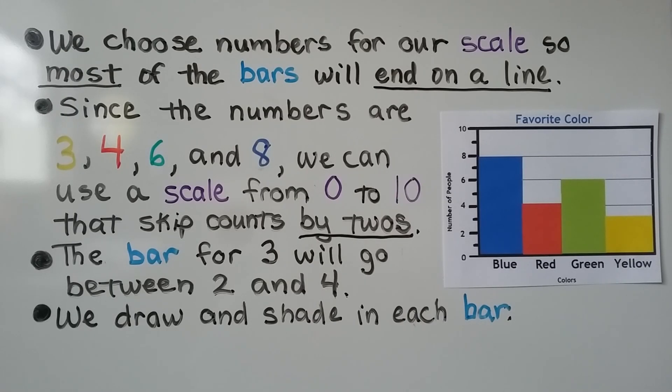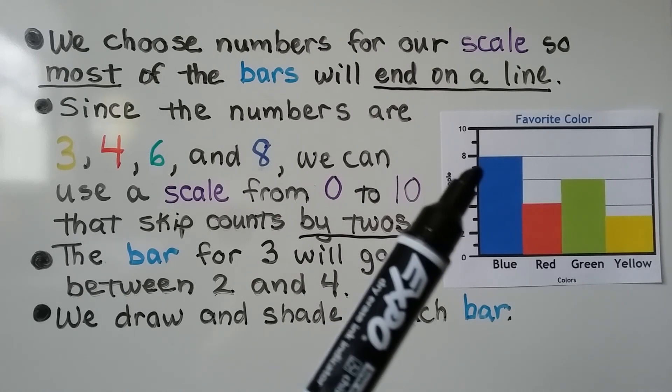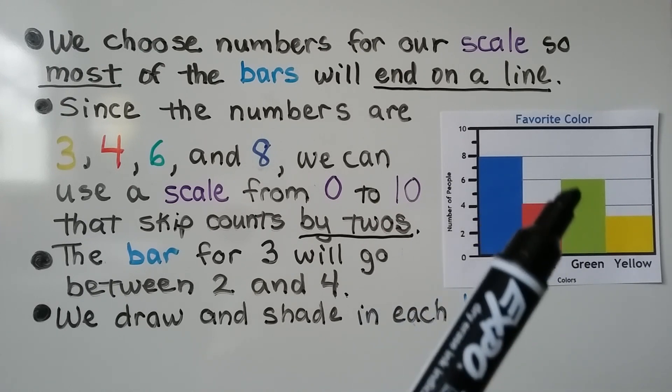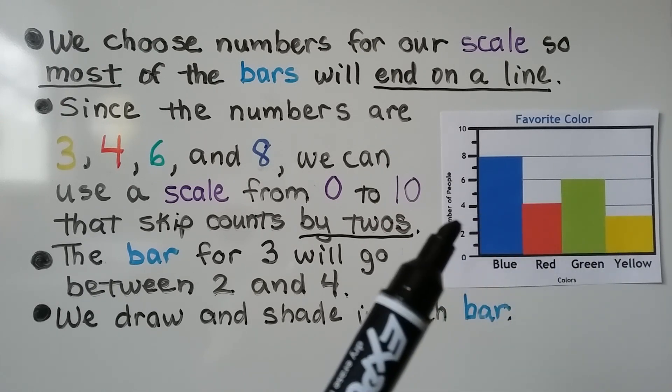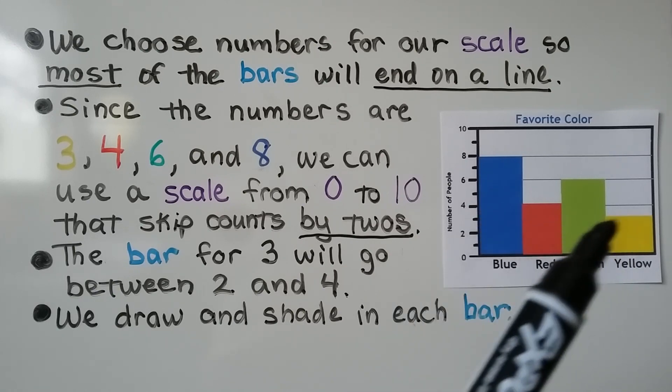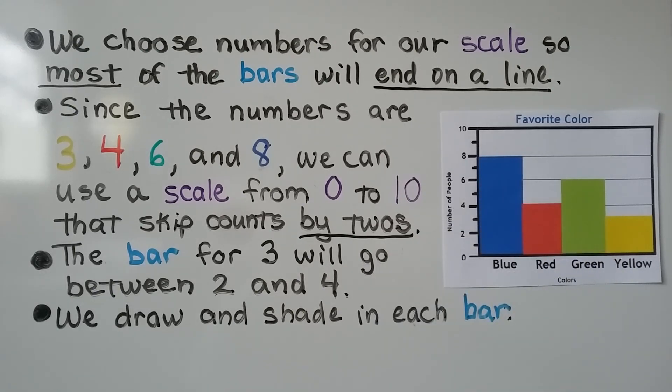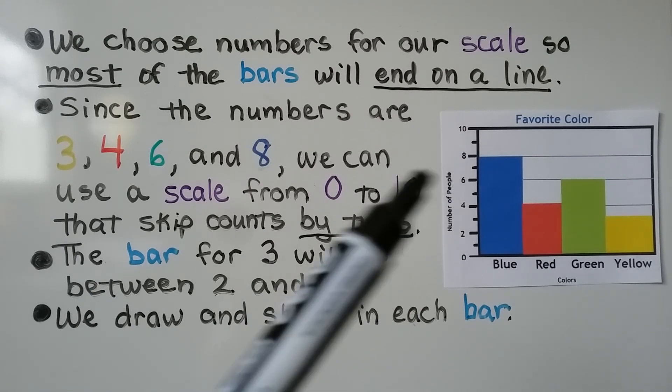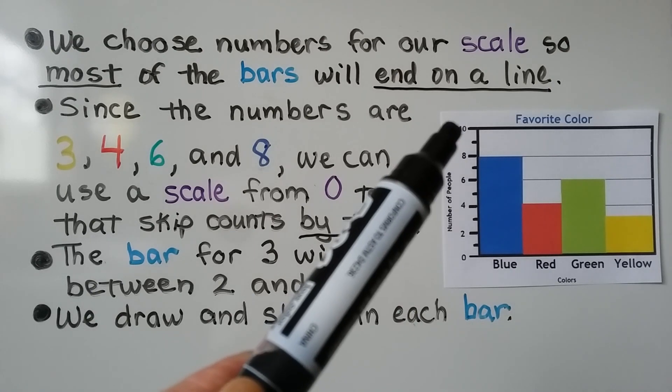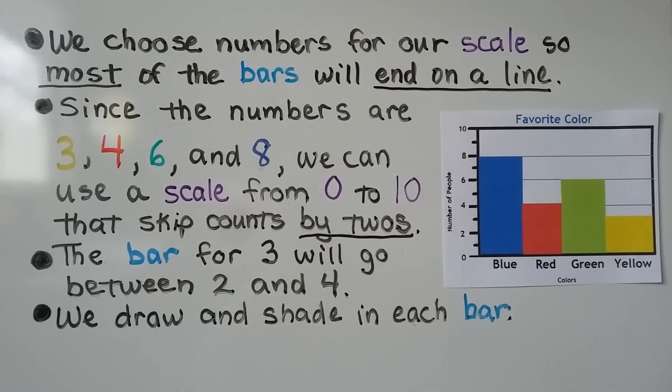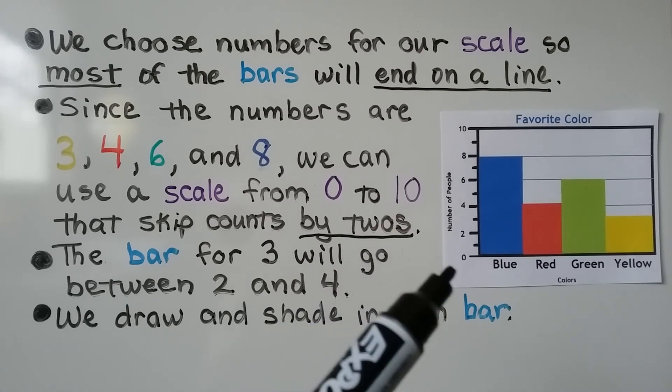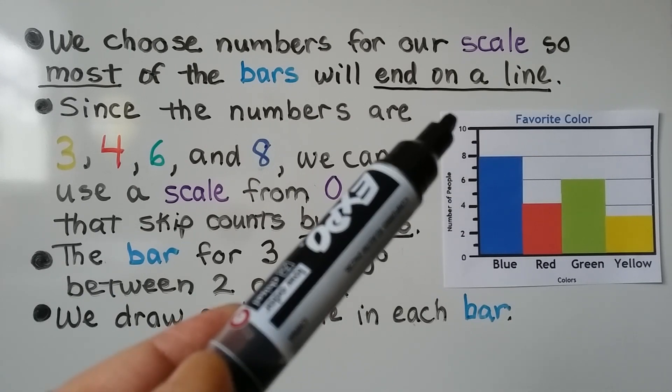We choose numbers for our scale so most of the bars will end on a line. Blue ends on a line, red ends on a line, green ends on a line. Yellow doesn't - it's in between, but that's okay because most of the bars end on a line. Since the numbers are 3, 4, 6, and 8, we can use a scale from 0 to 10. So notice it went to 8, but we went another increment - we went another 2. We're skip counting by 2s: 0, 2, 4, 6, 8, so we went to 10.